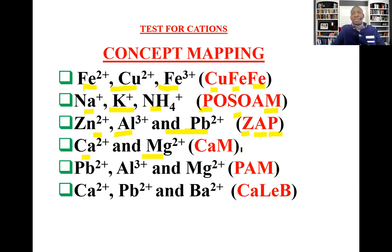Then we have the CALM group — calcium and magnesium. These are cations that form a white precipitate which is insoluble in excess sodium hydroxide. Then we have the PALM group — lead, aluminium, and magnesium. These cations form a white precipitate which is insoluble in excess aqueous ammonia.